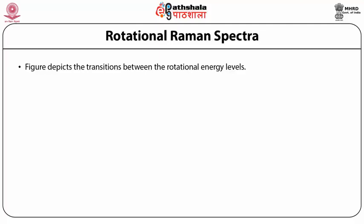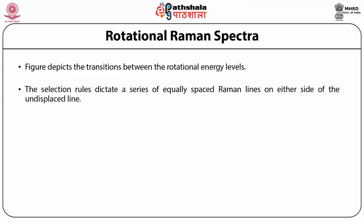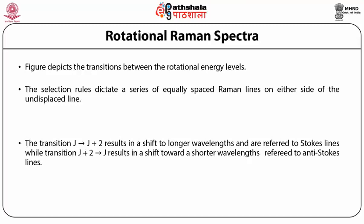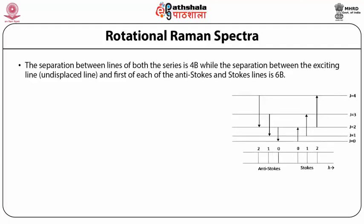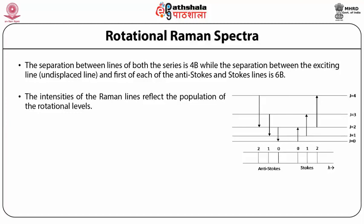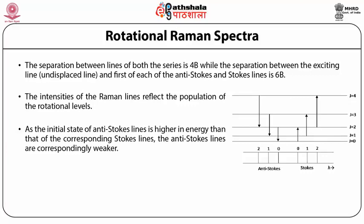The figure depicts the transitions between rotational energy levels. The selection rules dictate a series of equally spaced Raman lines on either side of the undisplaced line. The two series of lines are called S-branches, both with ΔJ = +2. The transition J to J+2 results in a shift to longer wavelengths, referred to as Stokes lines, while transitions J+2 to J result in a shift towards shorter wavelengths, referred to as anti-Stokes lines. The separation between lines of both series is 4B, while the separation between the exciting line and the first of each anti-Stokes and Stokes line is 6B. The intensities of the Raman lines reflect the population of the rotational levels. As the initial state of anti-Stokes lines is higher in energy than that of the corresponding Stokes lines, the anti-Stokes lines are correspondingly weaker.